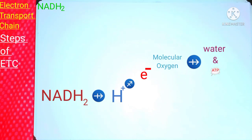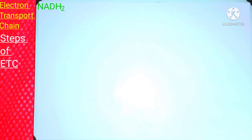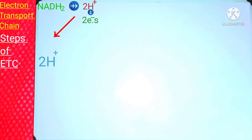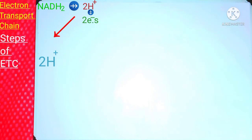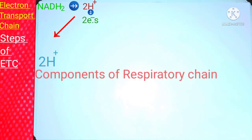Now pay full attention to this step-by-step series of chemical reactions. From NADH2 we take two hydrogen ions and provide them to the respiratory chain. From these hydrogen ions, electrons are removed and protons are also separated. Now we move these electrons through a series of oxidation-reduction reactions known as ETC. The question is: what are the components of ETC and from which it is made?